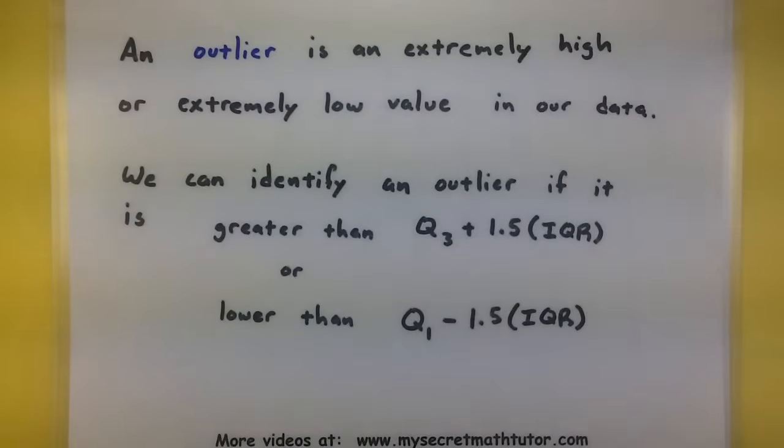An outlier is an extremely high or extremely low value in the data set. Now in addition to just being something really high or something low, you want to make sure that it satisfies the following criteria. If you want to find an outlier, it must be greater than Q3 plus 1.5 times the interquartile range, or it must be lower than Q1 minus 1.5 times the interquartile range. This is making sure that it really is an extremely high value or extremely low value.